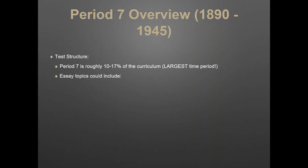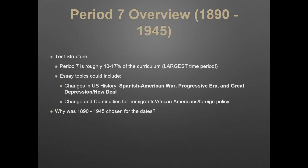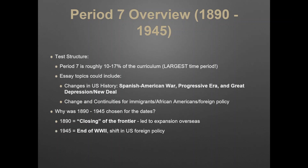Some of the things that essays could include: changes in U.S. history like the Spanish-American War, Progressive Era, Great Depression, New Deal, changes and continuities for immigrants, African Americans, and foreign policy during this time. Why was 1890 to 1945 chosen? 1890 was when you have the closing of the frontier — the Turner Thesis — which is going to lead to expansion overseas. And 1945 was chosen because of the end of World War II.